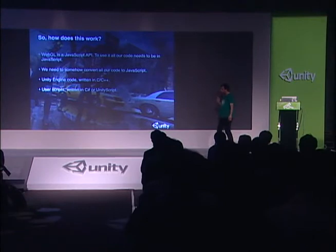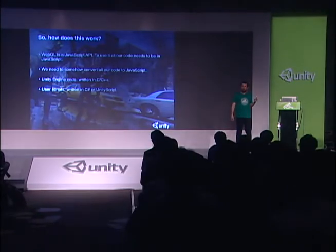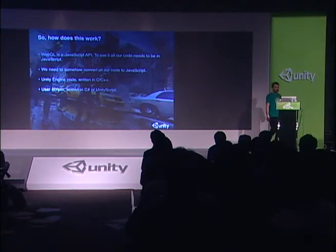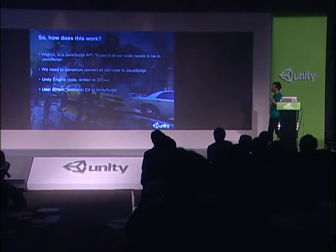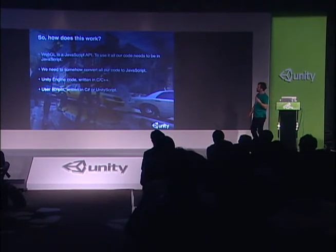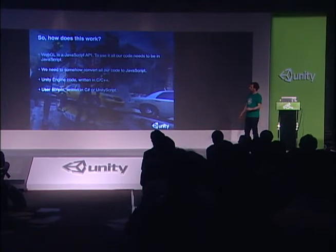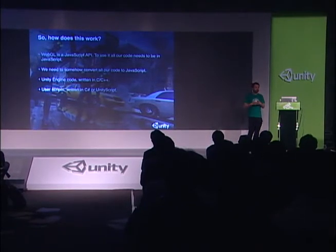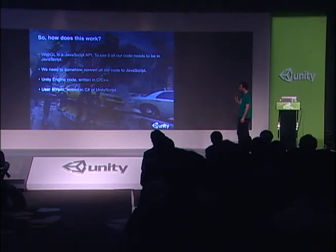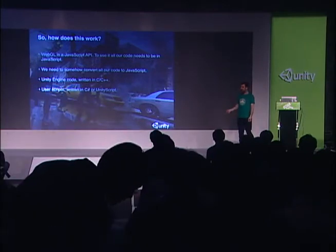WebGL is a JavaScript API, which means all our code has to be in JavaScript. That means we have to convert all the code we have into JavaScript — the Unity engine and runtime code written in C++, and the user scripts like your game code written in C# or UnityScript. Somehow we have to get all this code converted into JavaScript.